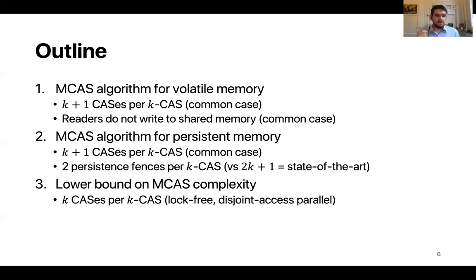Finally, our last contribution is to show that our previous algorithms are nearly optimal with respect to the number of compare and swap instructions used. So we show that you need at least k compare and swaps for a k word MCAS if your implementation is lock free and disjoint access parallel. And note how close this lower bound is to the complexity of our algorithms. In this talk, I would like to focus on the first contribution and for the other two contributions, I invite you to check out our paper.